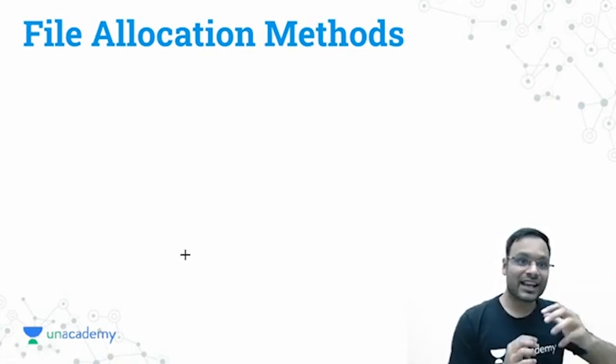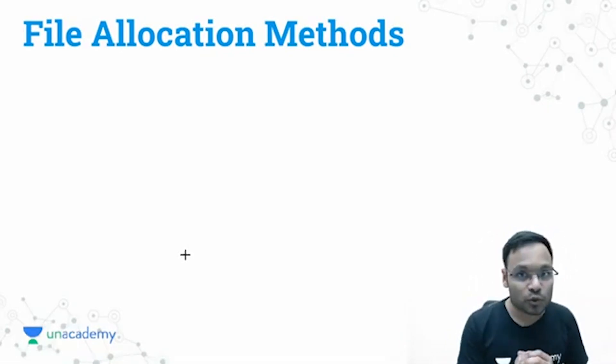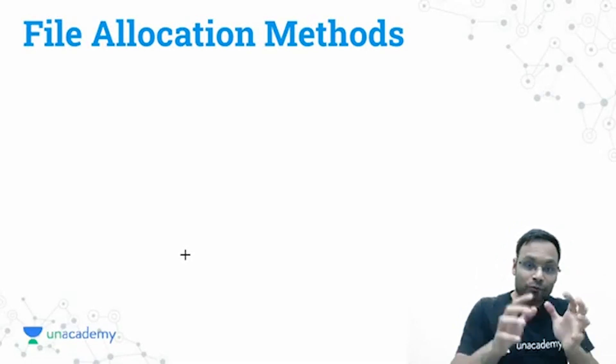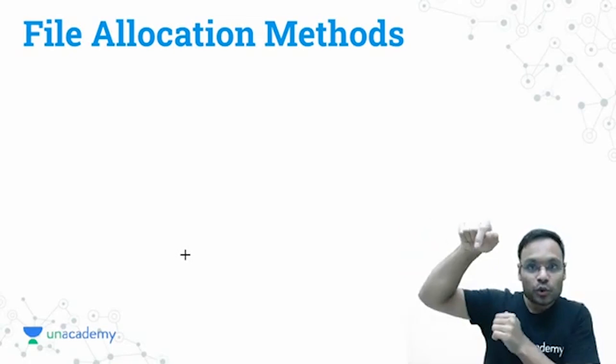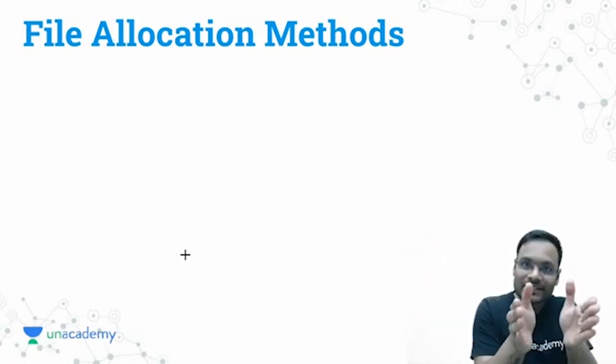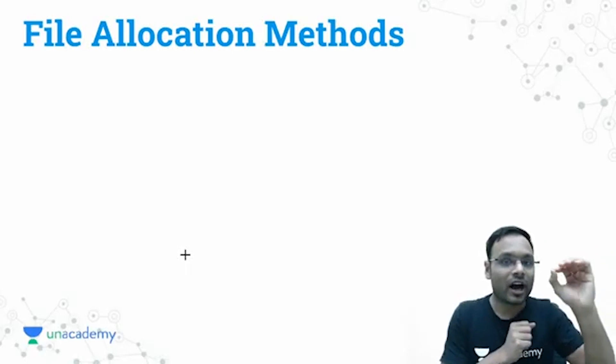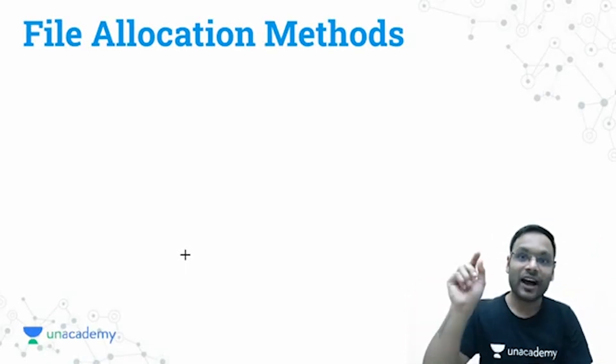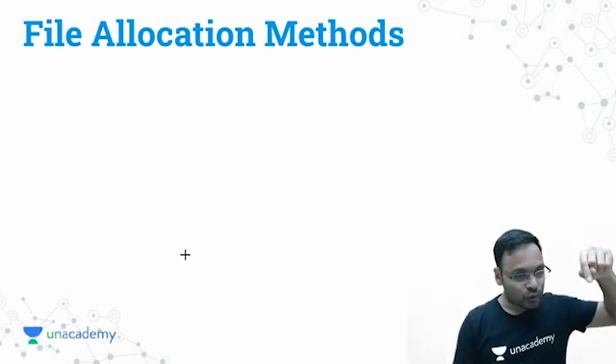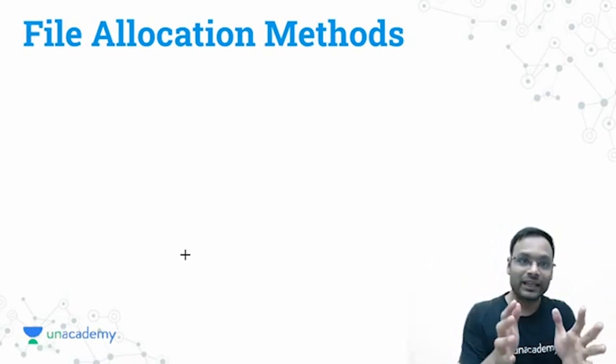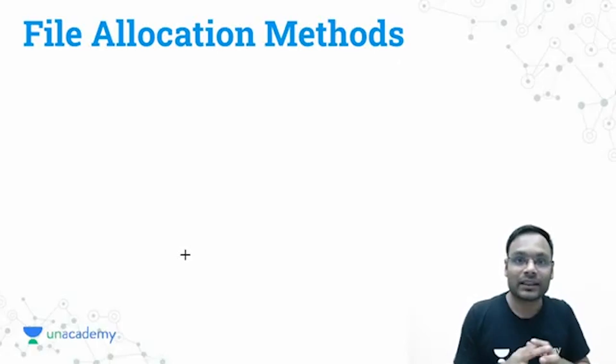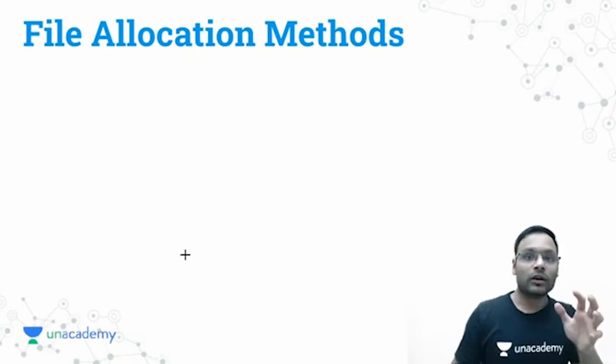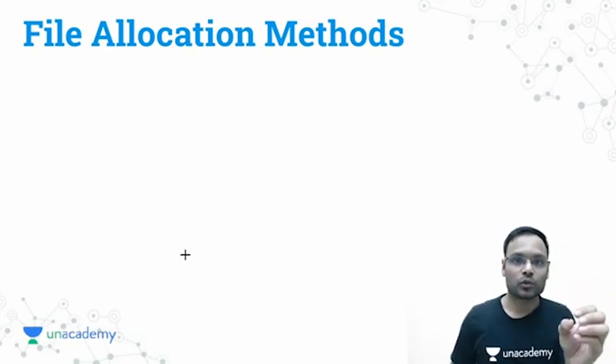If a file is larger than a block—suppose a block is one kilobyte but file size is four kilobytes—four blocks are needed to store the file. Which four blocks are used to store this particular file? The operating system should have particular accountability. The OS should know which blocks are used to store this particular file. The file allocation method will be used to know or indicate which block to be used to store what file.